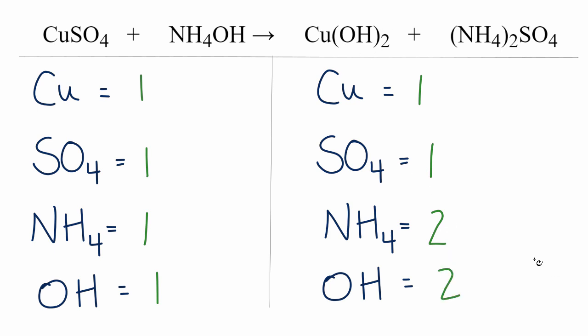So to balance the equation, if I put a coefficient of two right here, this will apply to everything. I'll have the hydroxide, one of those times two, that gives me two hydroxides, and then the NH4, the ammonium ion, I have one of those times two, that'll give me two of those, and all of a sudden, we're done. This equation is balanced.